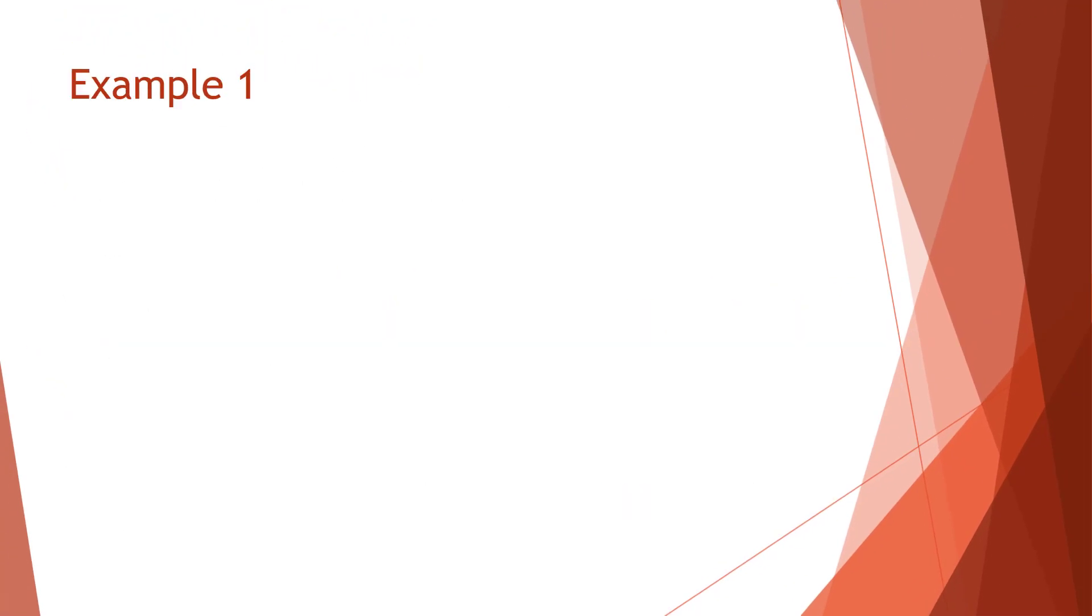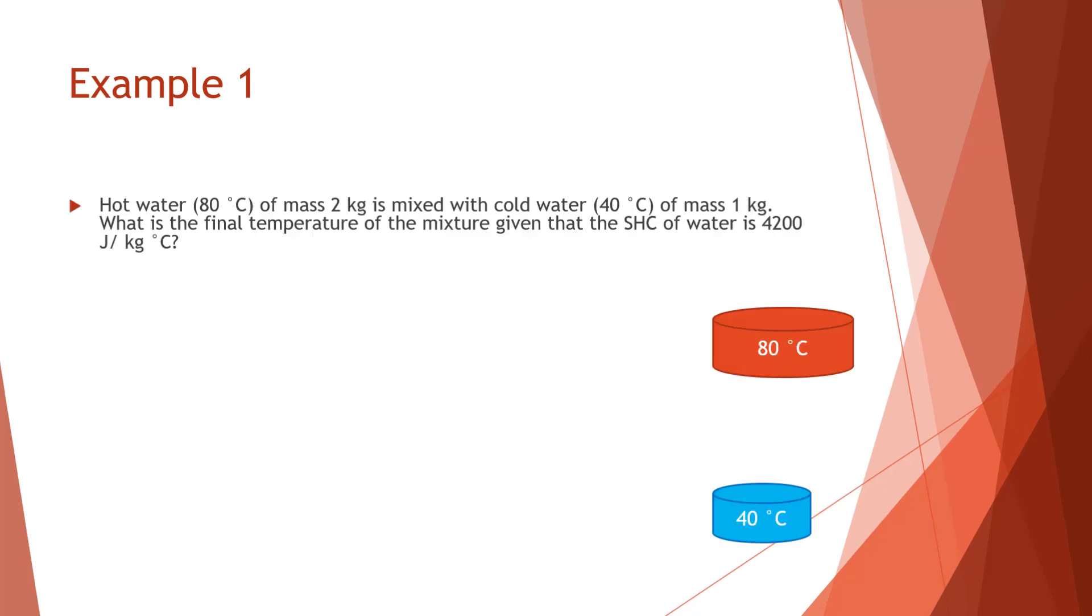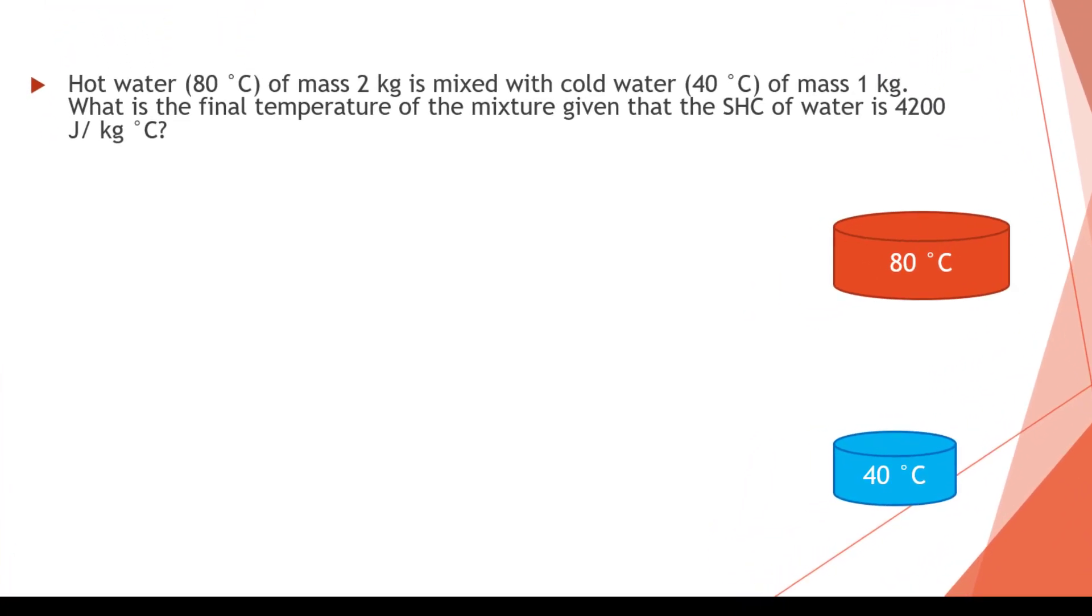We will use an example to help illustrate this idea. So hot water of 80 degrees Celsius of mass 2 kg is mixed with cold water of 40 degrees Celsius of mass of 1 kg. So what is the final temperature given that specific heat capacity is 4200?